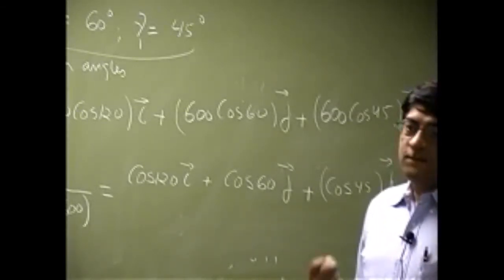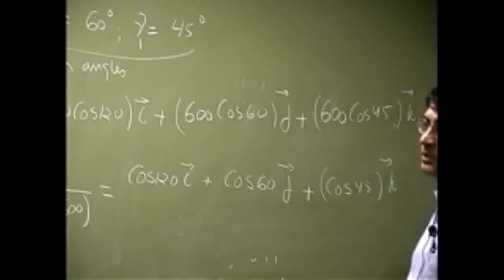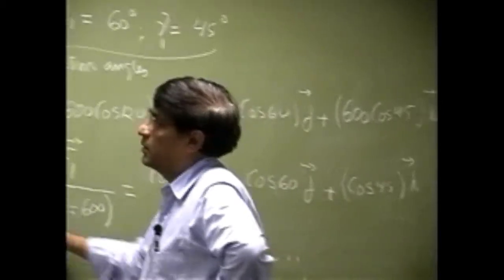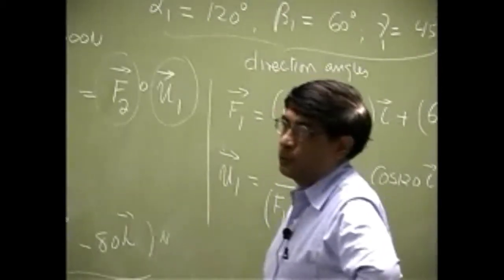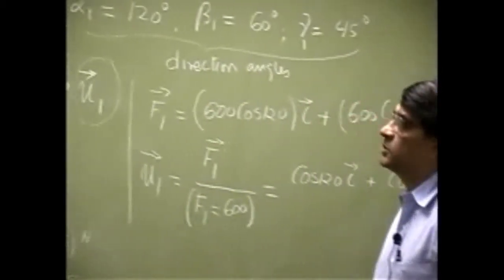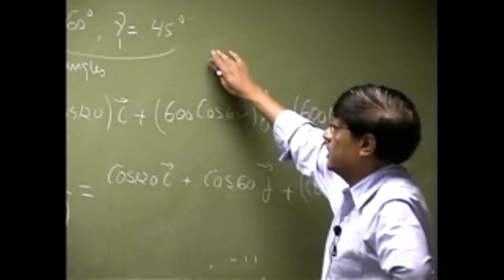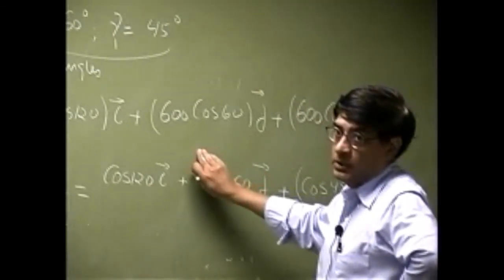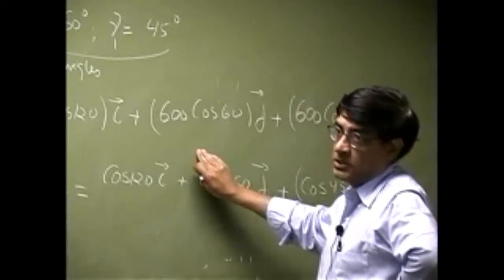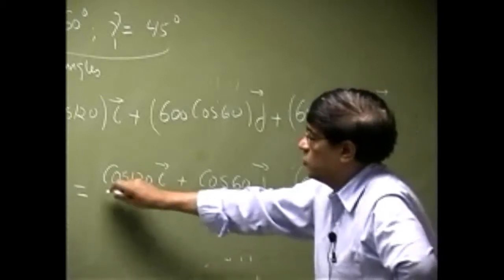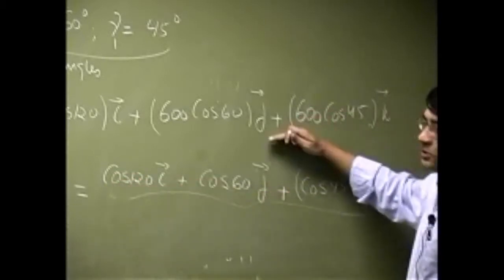plus cosine 60j plus cosine 45k. So that gives you the equation for the force F1. And then from there you found the unit vector along the force F1. Now we could skip this step. If you knew directly what the direction angles are, then you should be able to write this equation without going through this step.